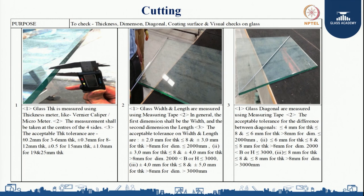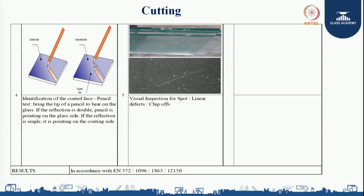Next point of inspection in cutting is coating surface identification. A single glazing unit has two surfaces: surface 1 and surface 2, also called coating surface and non-coating surface. A simple method to identify the coating surface is the pencil test — place the pencil on top of the glass surface. If you feel a single point of impression, it is the coating surface. If you see multiple reflections or images of the object, it indicates a non-coated surface.